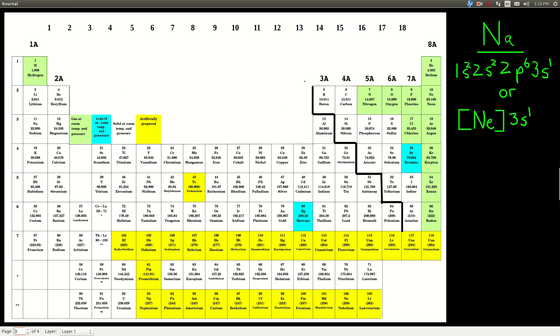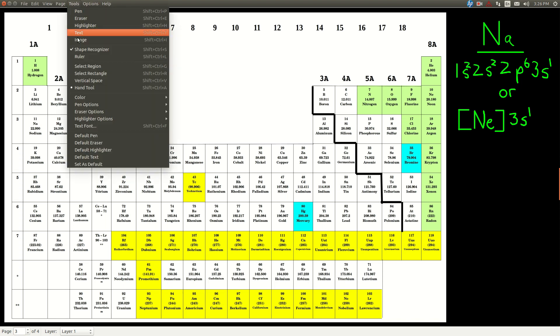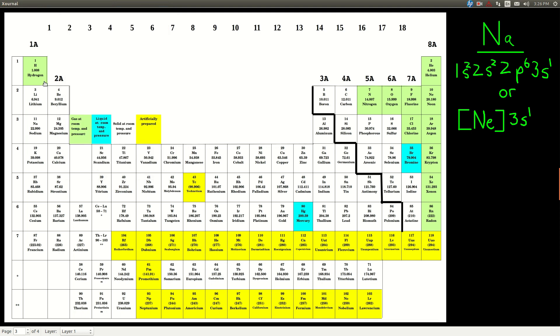So here's a regular periodic table, and let's say we were writing the electron configuration for sodium. Well, there's sodium right here, so we go through the blocks, 1S2, then on this one, helium's over here, but really it's, we go here,